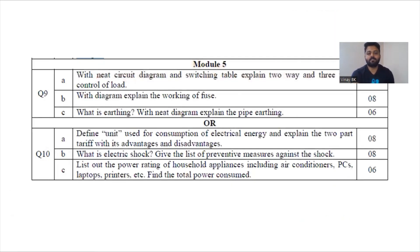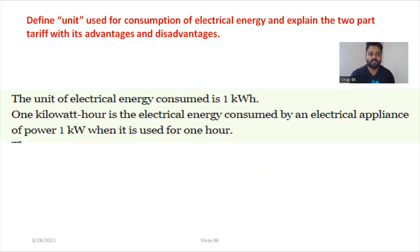Question number 10a asks us to define the unit used for consumption of electrical energy and explain the two-part power tariff with its advantages and disadvantages. For the definition of unit: one kilowatt hour is the electrical energy consumed by an electrical appliance of power one kilowatt when it is used for one hour.